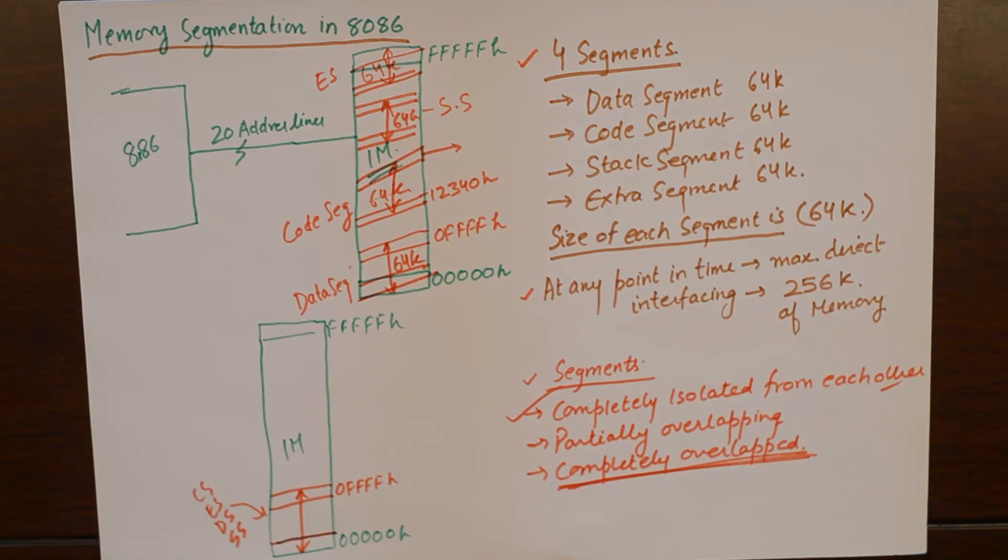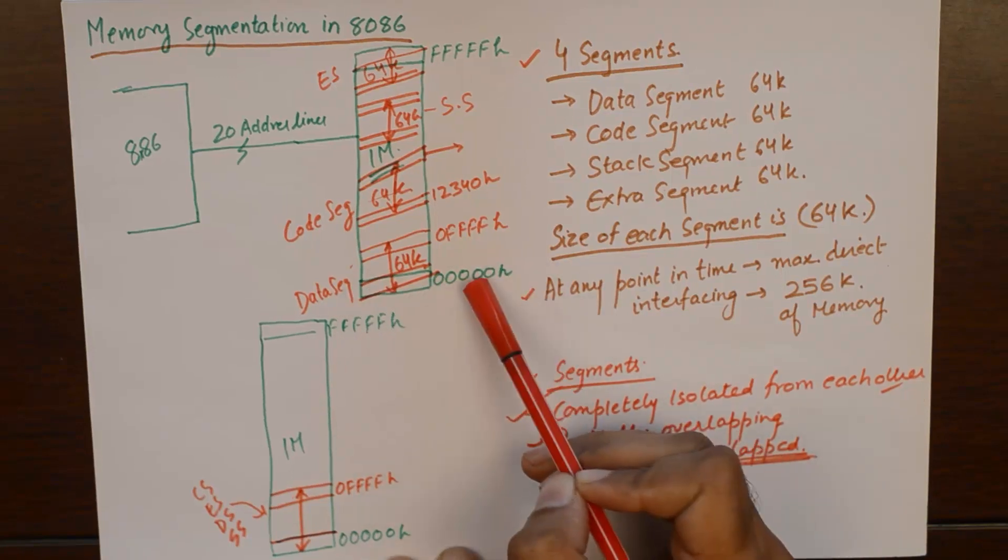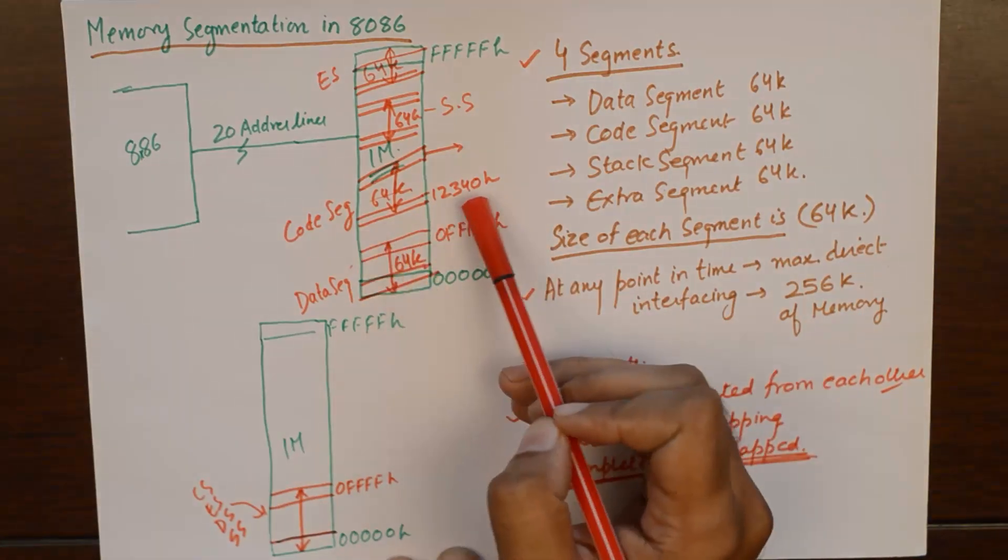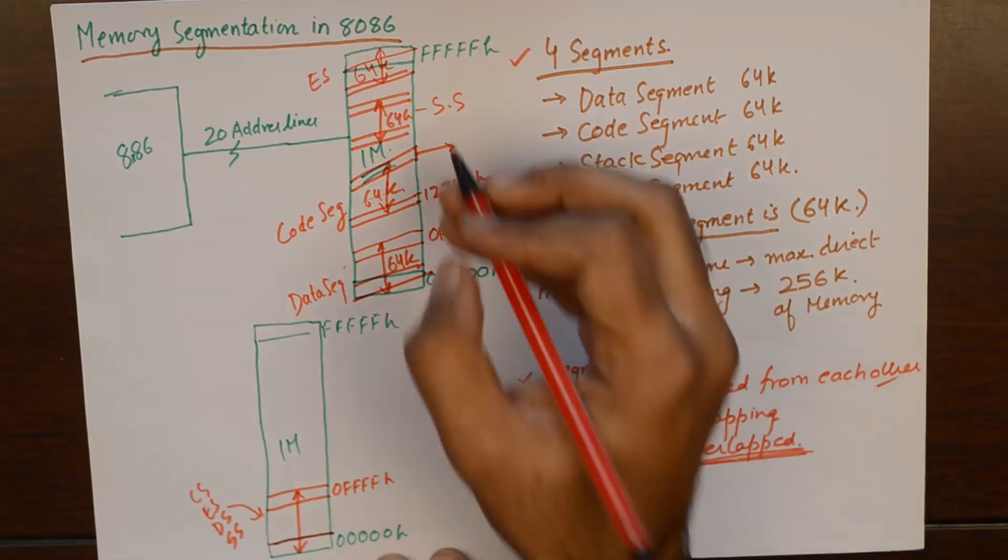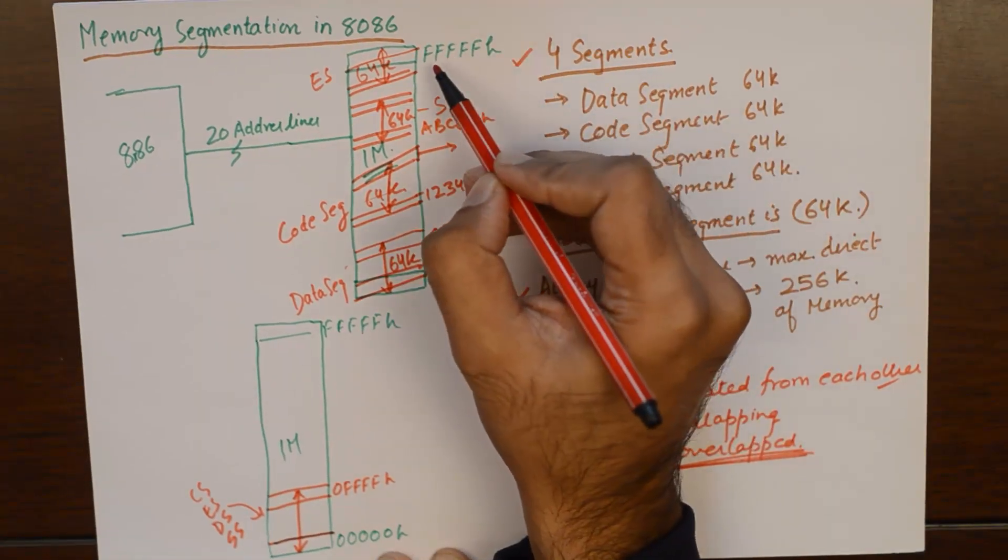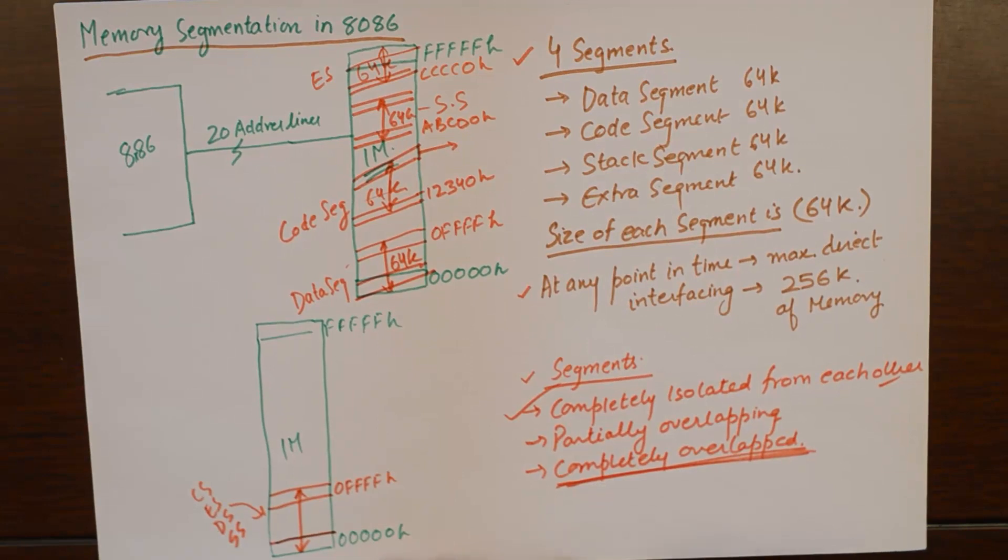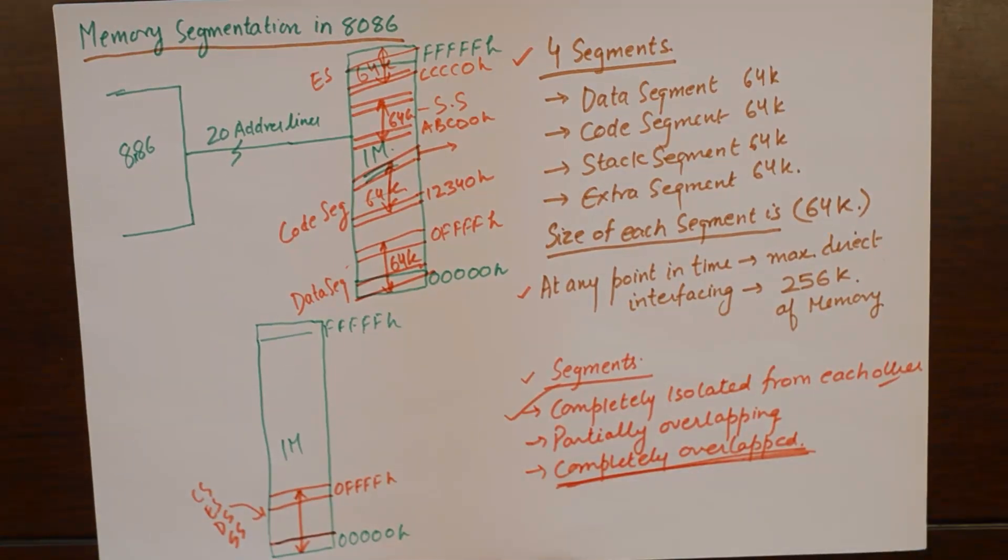But one big question is, who decides the starting address of a segment? Where do we actually set segments? For example, I mentioned here that my data segment is starting from 00000H, my code segment is starting from 12340H, my stack segment is starting from, let's say, ABCD0H, and my extra segment is starting from some location CCCC0H. So what is that thing that decides where the segment should start from?